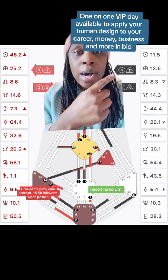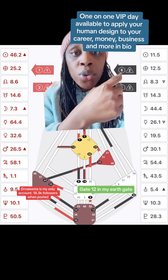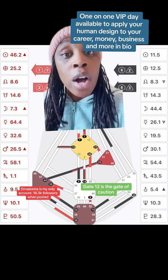Next, you see here, I have gate 12 in my earth gate. Gate 12 is the gate of caution.